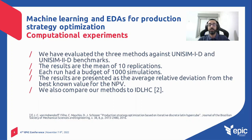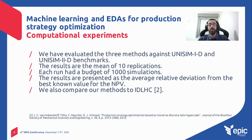We evaluated our methods against the UNISIM-1D and UNISIM-2D benchmarks. UNISIM-1D is limited to well placement, while UNISIM-2D also includes the number of wells. Since our methods are stochastic, we ran each method 10 times and report the mean results. Each run was limited to 1000 simulations. We present results as the average relative deviation from the best known NPV for each benchmark, and also show a comparison to IDLHC, which is the standard method for production strategy optimization in our research group.